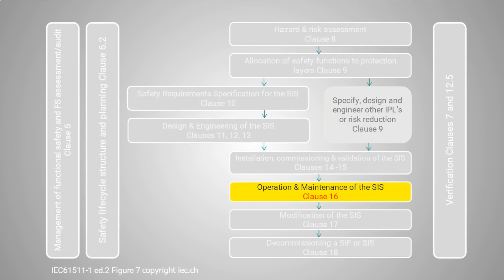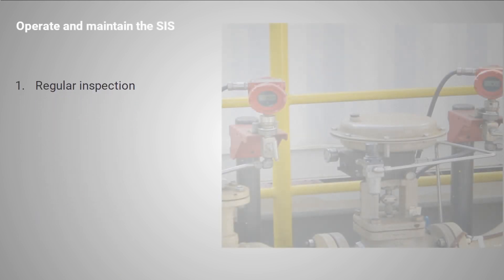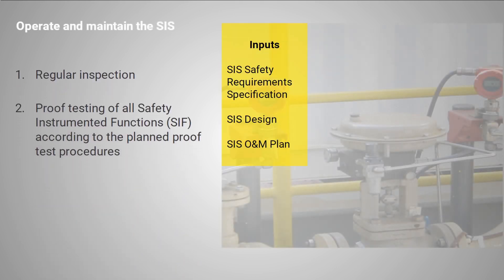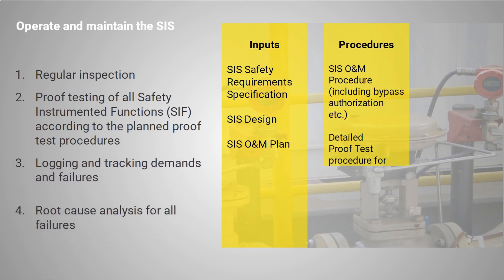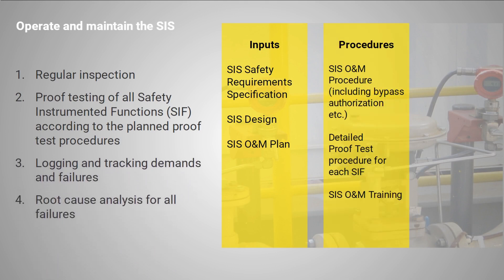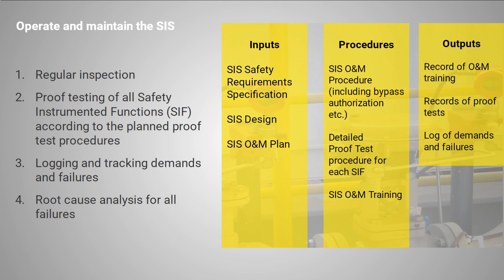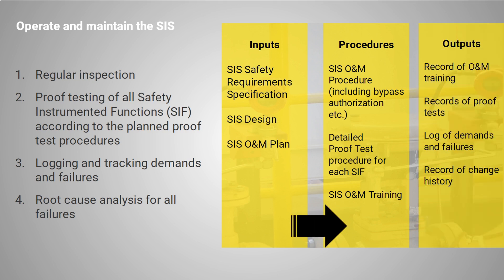Once an SIS is in operation, it is important that equipment is regularly inspected and maintained. Proof test procedures should have been developed for each safety function and these will have a frequency determined by the SIL verification calculation. As demands and failures occur, these should be tracked over time in order to look for negative trends which might lead to plant or system modification.